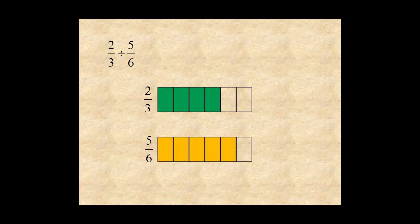Now, notice that five sixths is bigger than two-thirds. So only part of it will fit into two-thirds. Only four out of five parts will fit. So we say that four-fifths of five sixths fits into two-thirds. And the quotient is four-fifths.